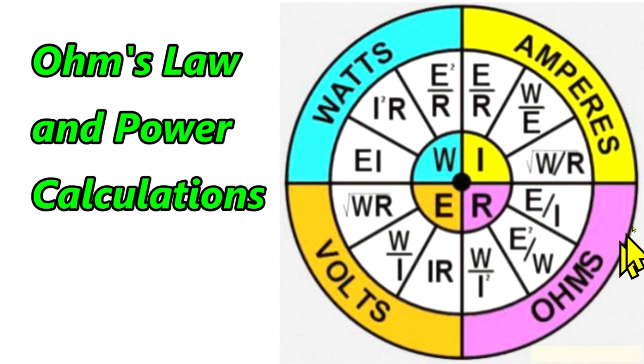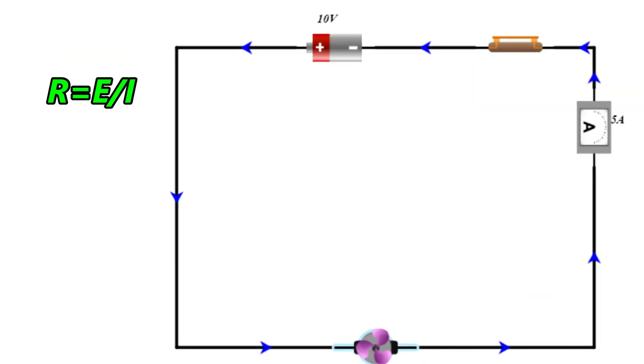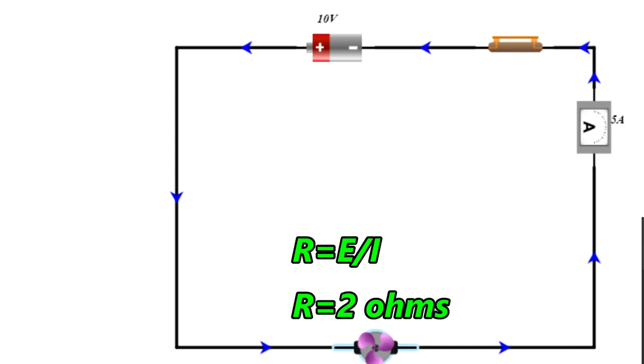And we move over to ohms right here. The Ohm's Law equation for ohms is volts divided by amps equals ohms. Let me give you an example. So here we have another circuit. And this time we have 10 volts. And our ammeter is reading 5 amps. And we have a motor. And we need to solve for how many ohms the motor represents. Can you solve this using Ohm's Law? So we have 10 volts divided by 5 amps, and that will give us 2 ohms.